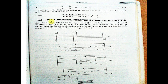For a three rotor system, we have three rotors A, B, and C, where rotors A and B are fixed at the ends and rotor C is in between. Let rotors A and B rotate in the same direction — say clockwise — and C in the opposite, anti-clockwise direction. In this case, there are two nodal sections obtained at points D and E.